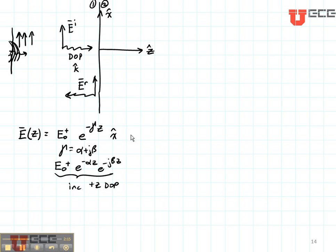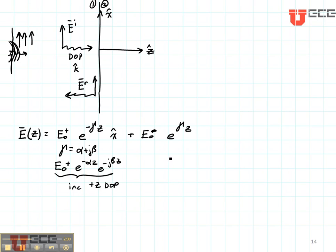Now let's write the part for the reflected field. That's going to have a magnitude of E zero reflected — let's call that E zero minus. That's the magnitude of the negative traveling electric field. It's going in the negative Z direction, so we put positive gamma Z here.